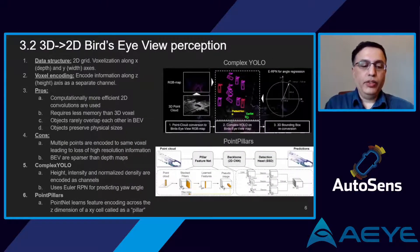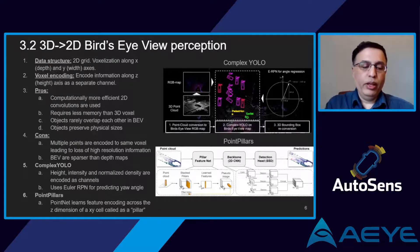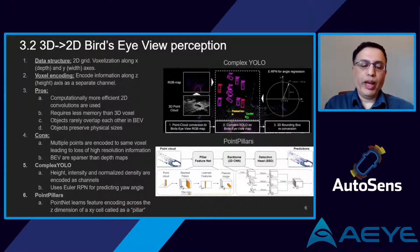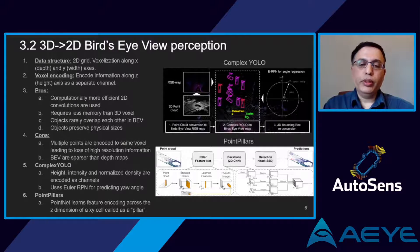Our second technique is the 2D bird's eye view, which uses Euclidean space. This representation preserves the depth and width dimensions of the point cloud and compresses the height dimension into a single value for each pixel. It voxelizes the point cloud along the X and Y axes and encodes Z axis information as a channel. Similar to the 2D depth map, it benefits from computationally less demanding 2D convolutions but suffers from accuracy degradation. Since objects rarely overlap in the bird's eye view, they also preserve their physical sizes when projected, and the representation tends to be more sparse compared to the depth map.